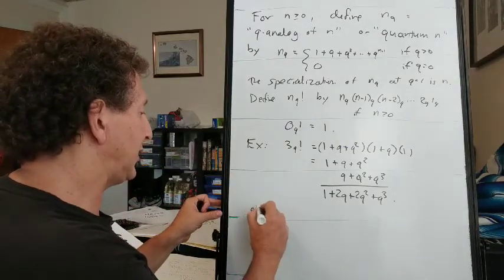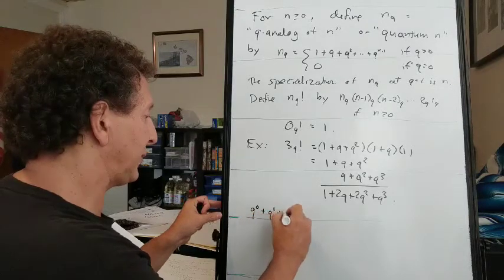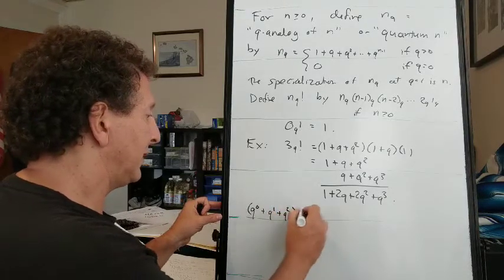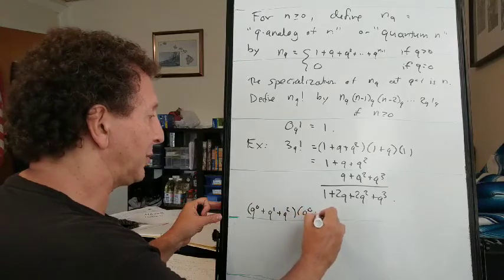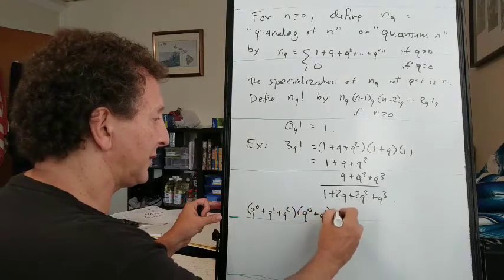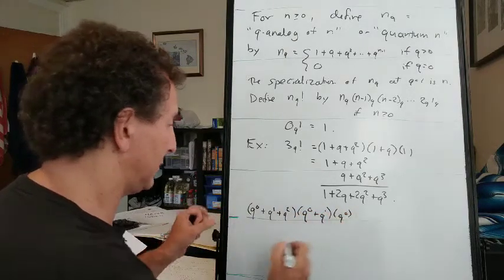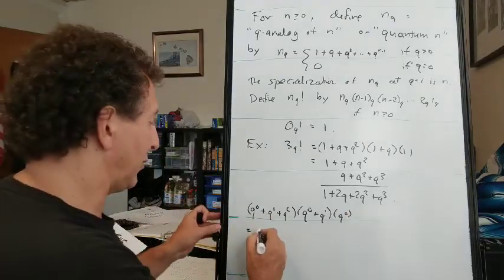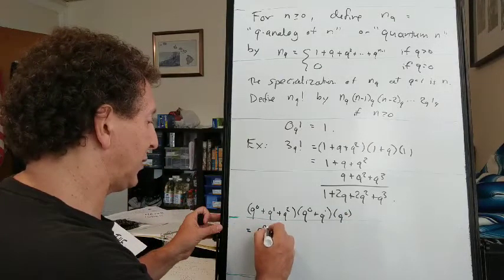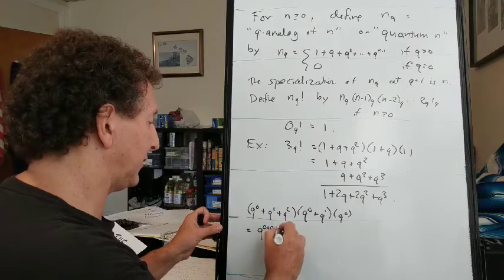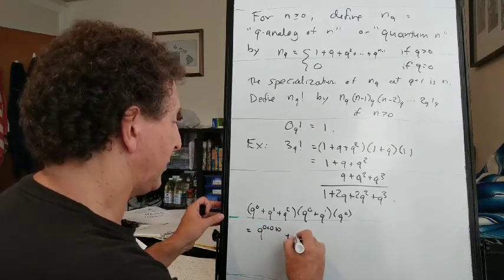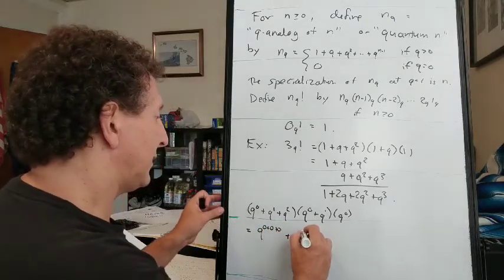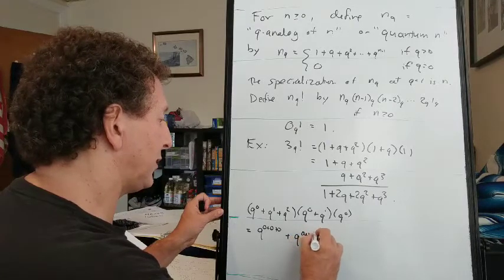Now let me do this again in a slightly suggestive way. Let's write this as q to the 0th plus q to the 1st plus q squared times q to the 0th plus q to the 1st times q to the 0th.